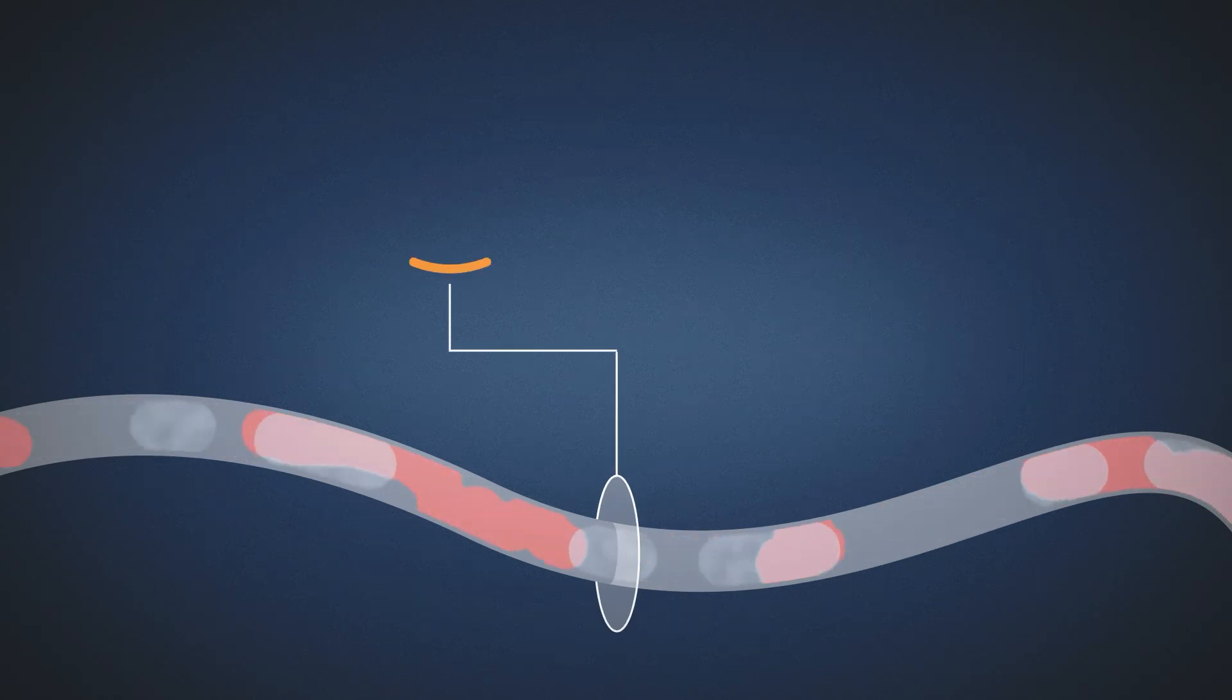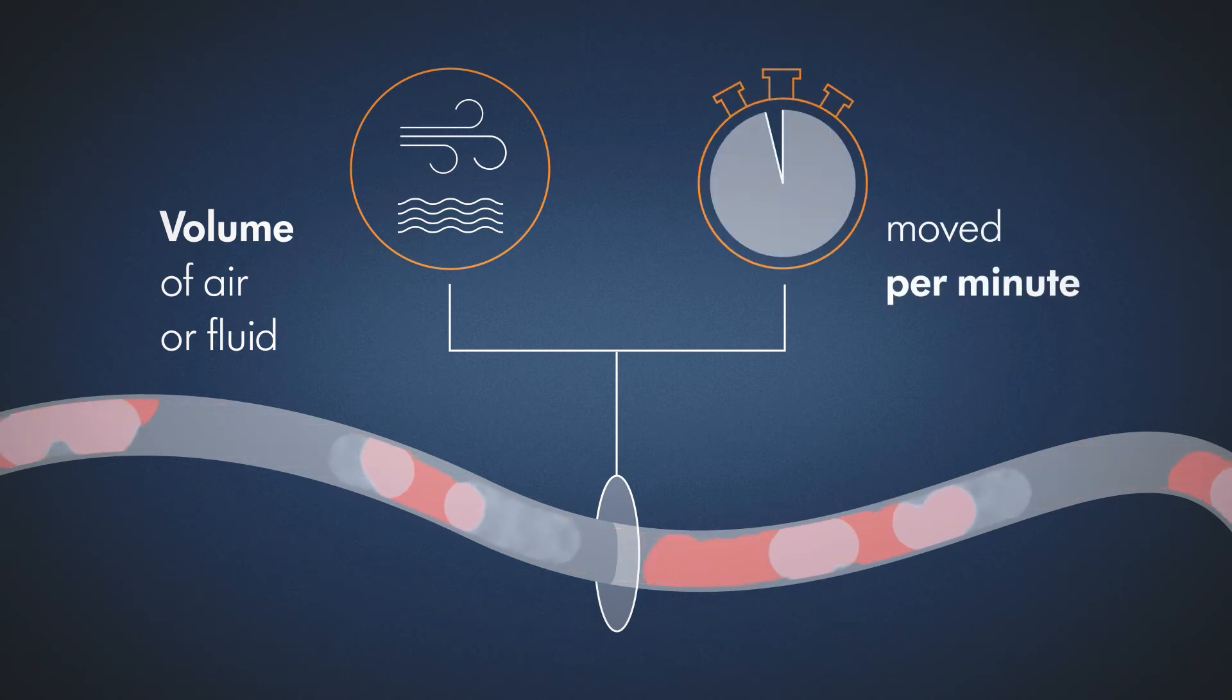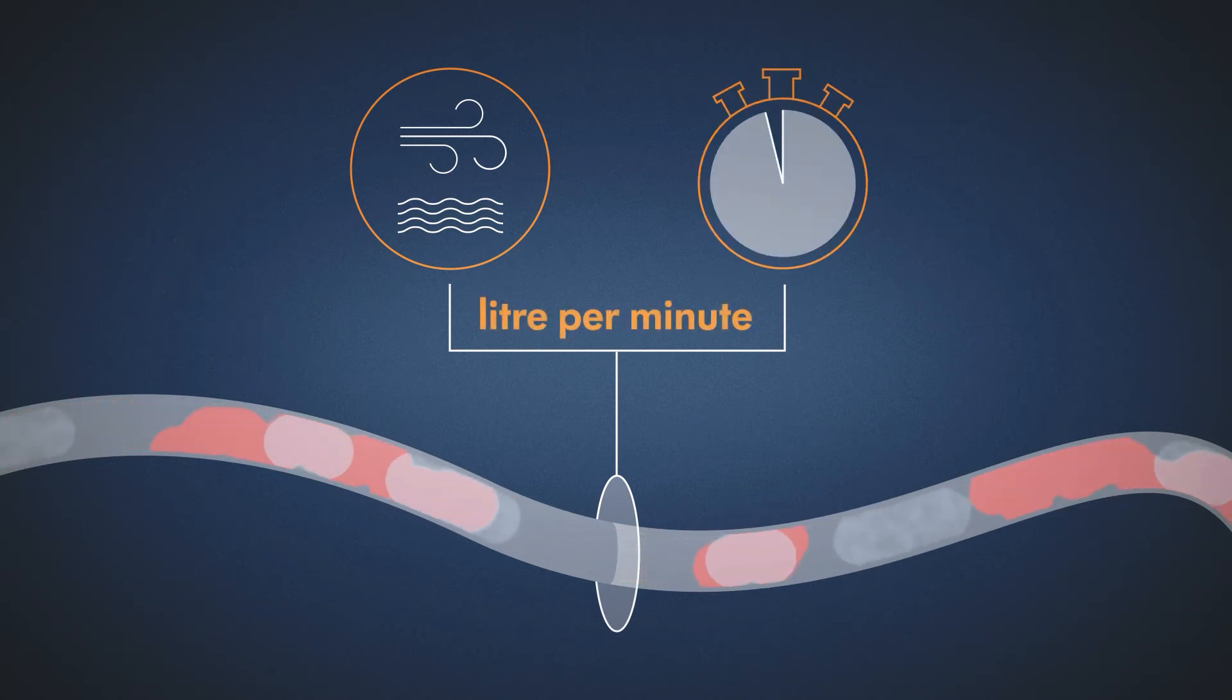Flow is measured by the volume of air or fluid moved per minute. The unit is liters per minute.